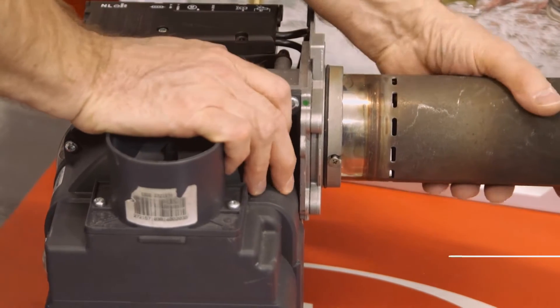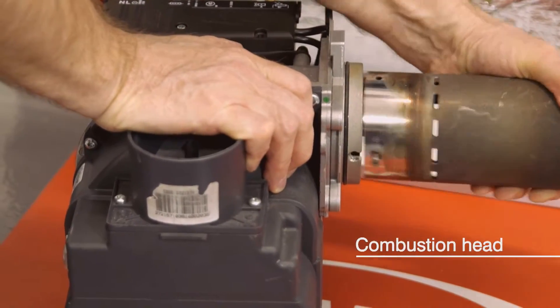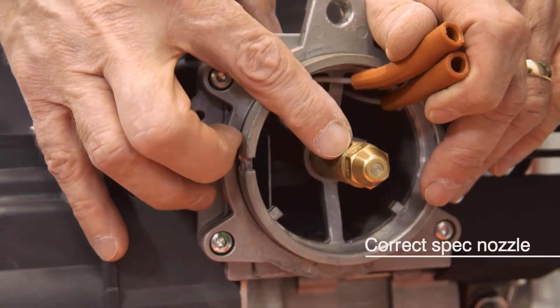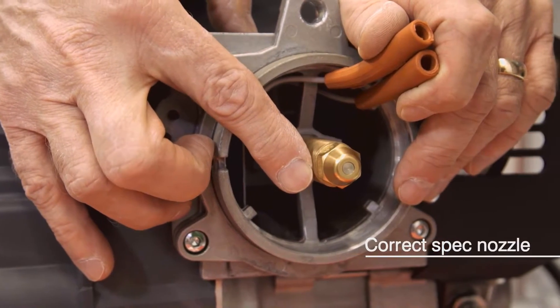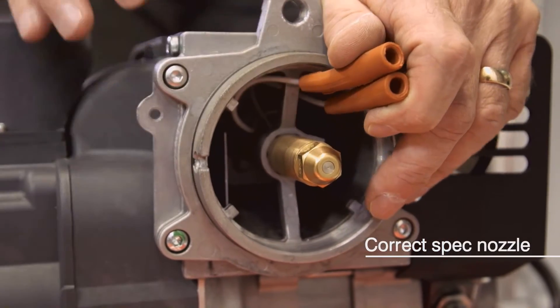First, remove the combustion head. Check that the nozzle is the correct spec for the boiler and output. This information is in the installation instructions.